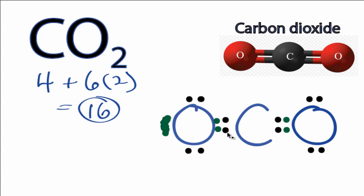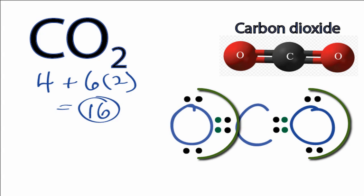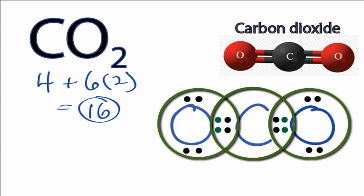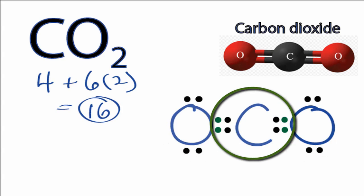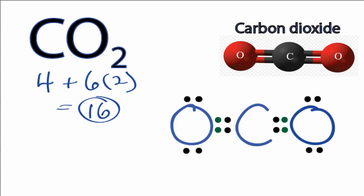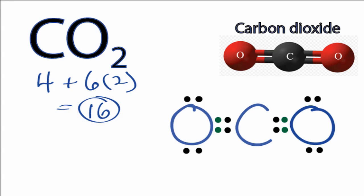Now both oxygens have eight valence electrons and the carbon in the center has eight valence electrons, so all atoms have full octets and we're only using the 16 valence electrons available. That's the Lewis structure for carbon dioxide. This is Dr. B — thanks for watching.